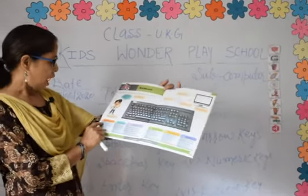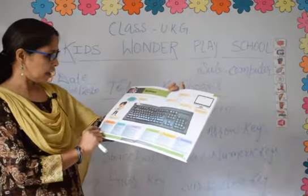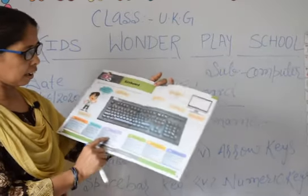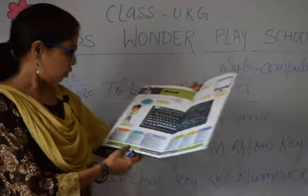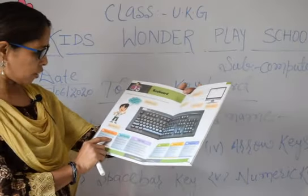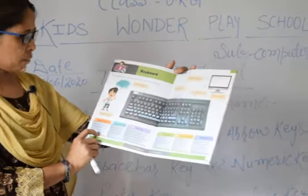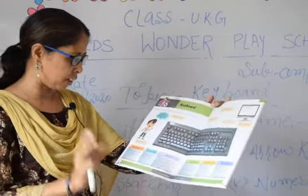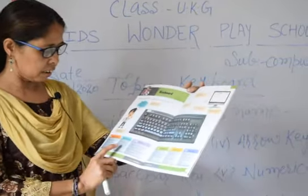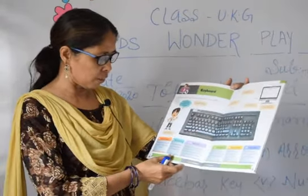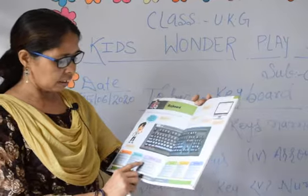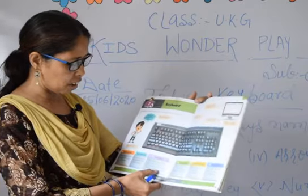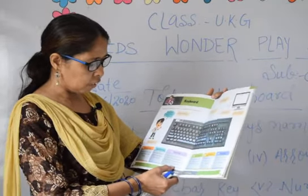Alphabet keys — these keys are used to type letters and words. Space bar key — it is used to give a space between two words. Enter key — it is used to move the cursor to the next line. Cursor is the small blinking line on the monitor.